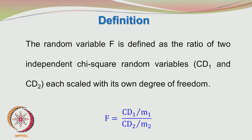We have seen both in the case of the T distribution and the chi-square distribution, the degrees of freedom K was the parameter. In the F distribution also, we have two parameters M1 and M2, where M1 and M2 are the degrees of freedom for the first and second chi-square distributions respectively.